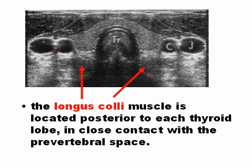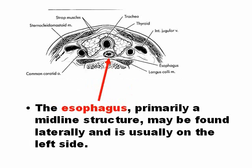The longus colli muscles are posterior to the thyroid. The esophagus, shown posterior to the trachea in the graphic, is generally posterior to the left lobe of the thyroid, but can be in other positions. It is a landmark for scanning, but not critically important.